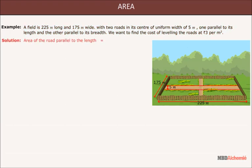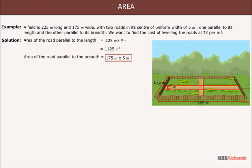Here, the area of the road parallel to the length is equal to 225 × 5 which is equal to 1125 m². Also, the area of the road parallel to the breadth is equal to 175 × 5 which is equal to 875 m².